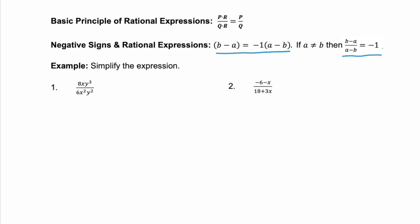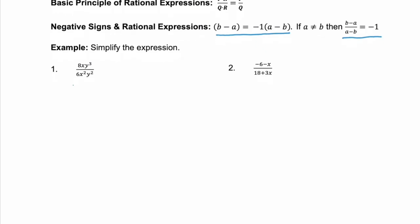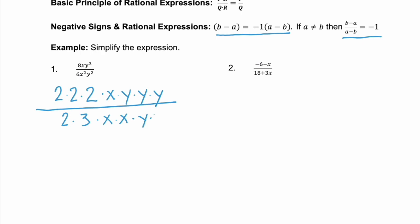Let's look at a few examples using factoring and canceling out what's common in the numerator and denominator. In example one, if we factor out the numerator we have 2 times 2 times 2, which gives us 8, times x, times 3 y's for y cubed. Factoring the denominator: 6 is 2 times 3, x squared is 2 x's, and y squared is 2 y's. The common factors simplify out as 1 — one 2, one x, and two y's cancel. Our simplified numerator is left with 4y, and the denominator with 3x, giving us 4y over 3x.